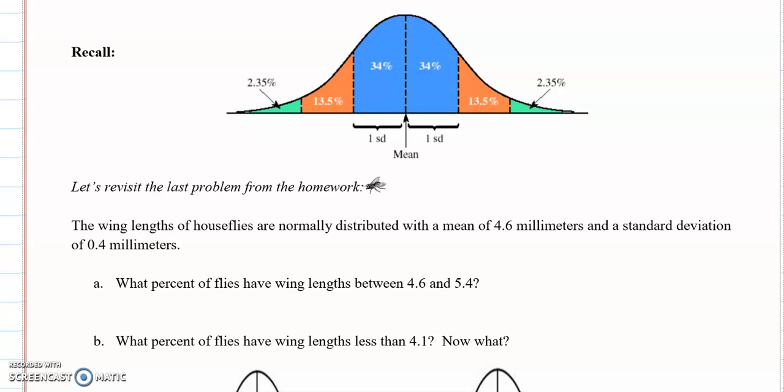Let's revisit that last problem from the homework. The wing lengths of houseflies are normally distributed with a mean of 4.6 millimeters and a standard deviation of 0.4 millimeters. What percent of flies have wing lengths between 4.6 and 5.4? So this worked out really nicely because it fit into this normal distribution, and we could find the percentages perfectly. So it was 34% plus 13.5%, which is 47.5%.